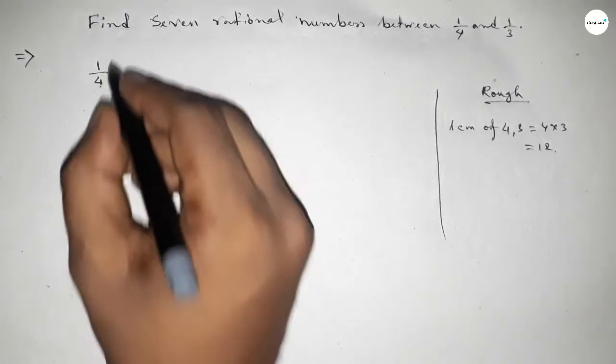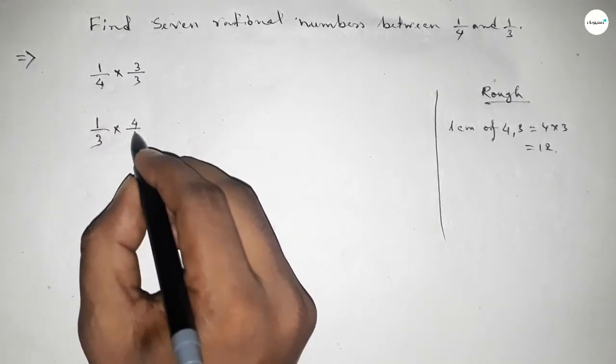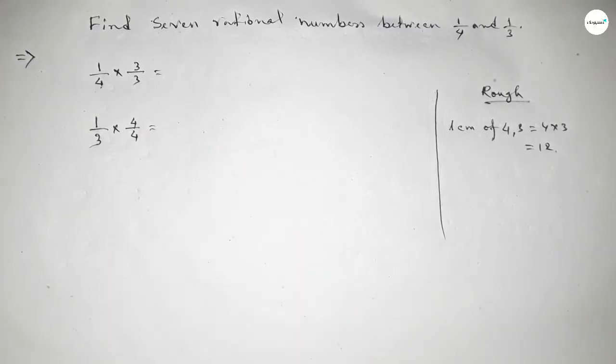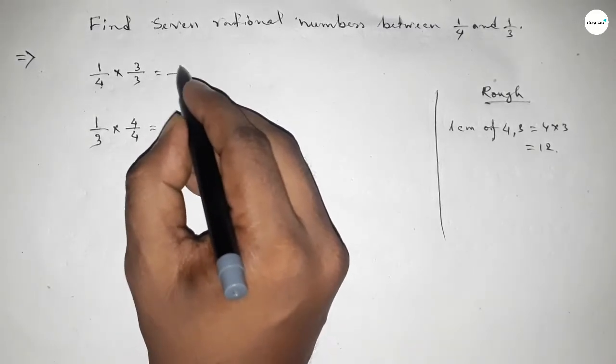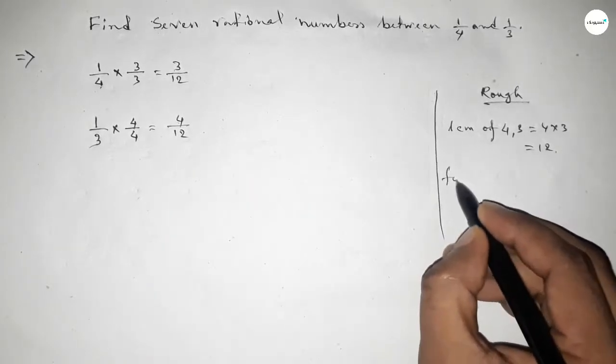Now what should be multiplied here up and down? If we multiply by 3 here and by 4 there, then we can get the denominator of both as 12. So this is 3 over 12 and this is 4 over 12.